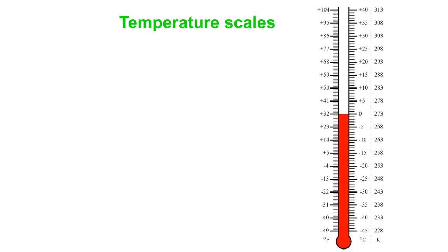Let's think about temperature scales. We see a lovely picture of a thermometer here, and it looks like it's pretty chilly outside. It's either 32 degrees on some scale or zero on another scale or 273 on yet a third scale.